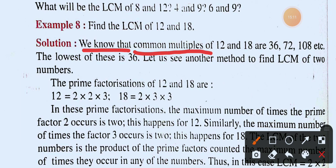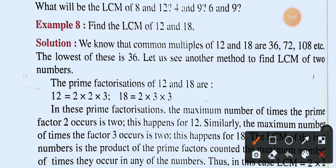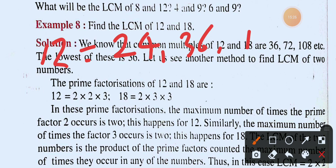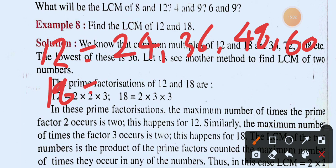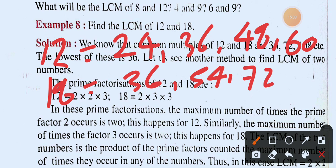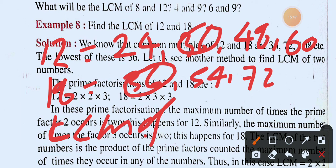The common multiples of twelve and eighteen are thirty-six, seventy-two, one hundred and eight, and so on. Looking at the twelve times table, we find that the lowest common multiple of twelve and eighteen is thirty-six. So LCM of 12 and 18 = 36.